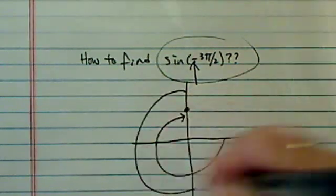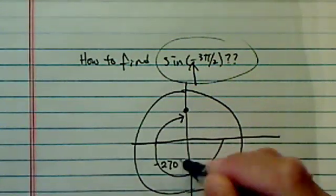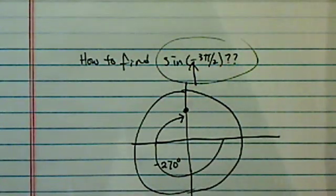Okay, so here's my unit circle, and this is 270 minus degrees, which is 3 pi over 2.